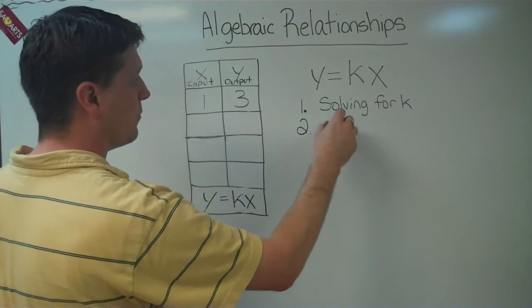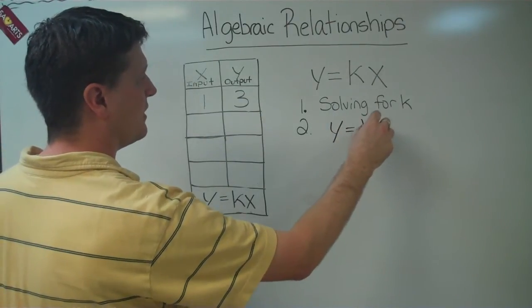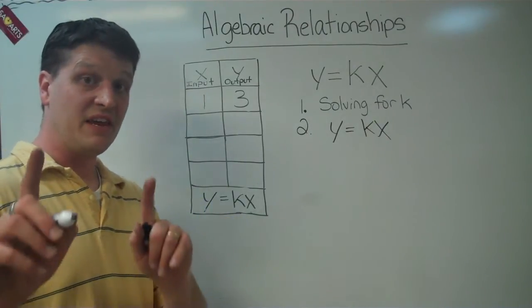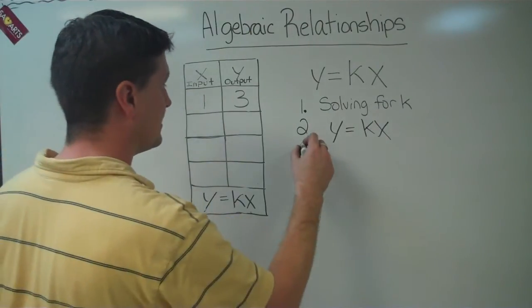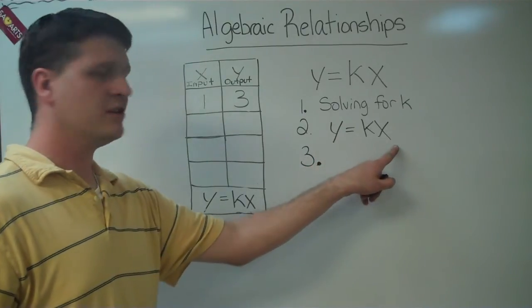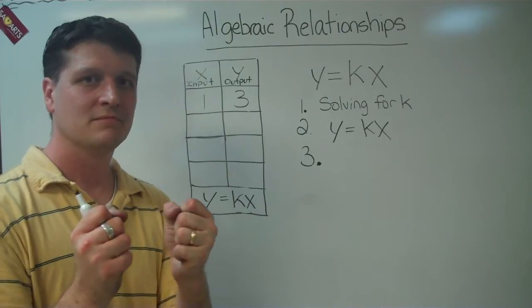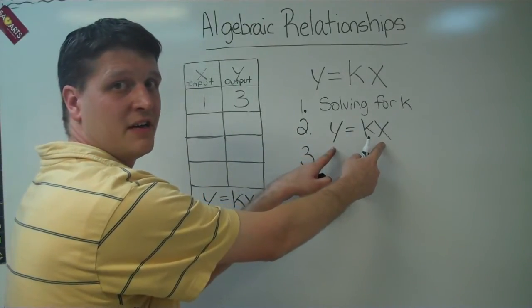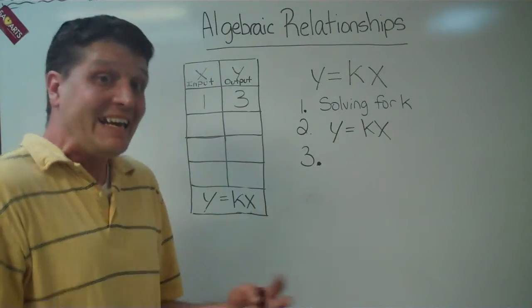So I'm going to write y equals k times x. The next part, the next step, what I'm going to do is, now that I have my equation, I'm going to take my given data, and I'm going to put it in to my formula. And that will allow me to solve for what I need.